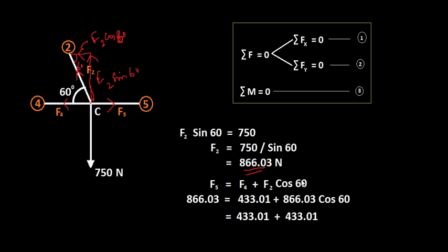If this equation is satisfied, the calculations are correct. If not, there is something wrong in the force analysis and you need to revise. Here our calculations are correct: F5 = 866 = F4 + F2 cos 60 = 433 + 866 × 0.5 = 433 + 433 = 866. This confirms the force analysis is correct.